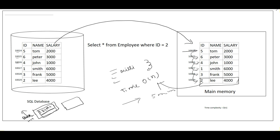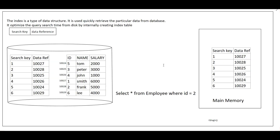To solve this problem we use indexing. Indexing is a kind of data structure. It has two fields: a search key and a data reference. It is used to quickly retrieve particular data from the database. When we create an index, it improves the search query and reduces disk calls for database retrieval. It creates a separate index table alongside the actual employee table.